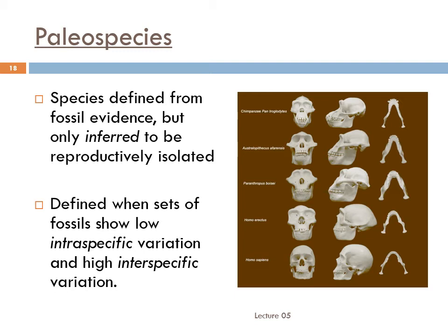That is, we've looked at the skeletal evidence and decided that these animals were similar enough to one another — intraspecific variation is low — and different enough from other animals — interspecific variation is high — that they probably constituted a species. We make that decision based on how much variation can be seen in modern, similar species, which are usually considered to be their descendants. Paleospecies are theoretical constructs. We can't observe them directly, only through the lens of their fossils and their evolutionary descendants.